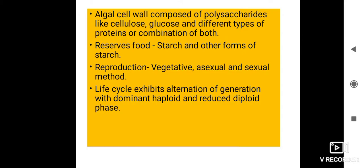Reproduction means the formation of a new generation like itself. This reproduction takes place by three different methods: vegetative reproduction, asexual reproduction, and sexual reproduction. Vegetative reproduction takes place by using vegetative plant parts. In asexual reproduction, there is an absence of fusion of gametes — it takes place by using spores. In sexual reproduction, there is fusion of male and female gametes. The life cycle of algae exhibits alternation of generation — with dominant haploid and reduced diploid phases. This topic will be studied further in point 3.4, Plant Life Cycle and Alternation of Generations. Thank you.